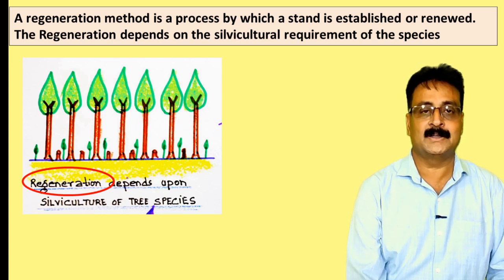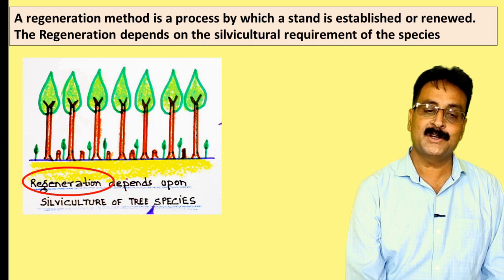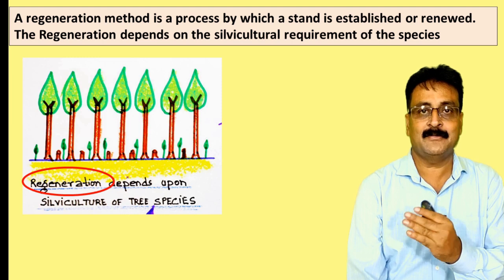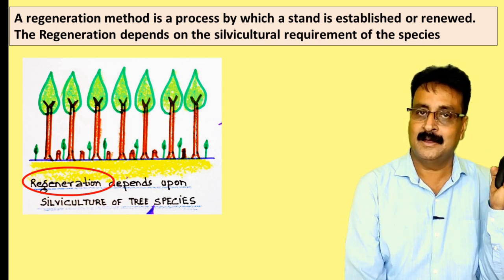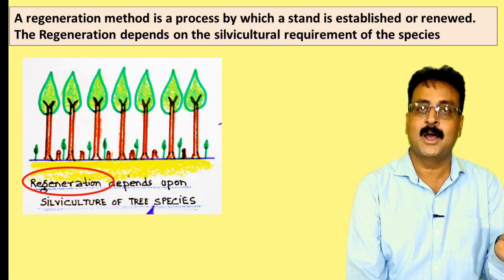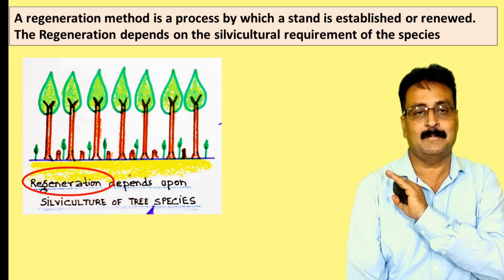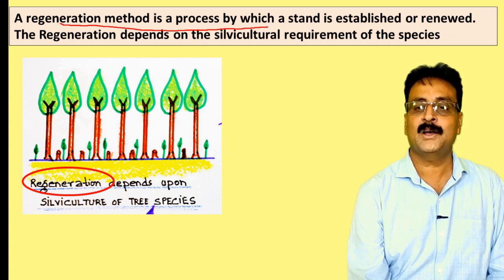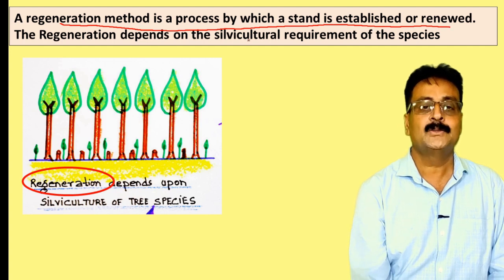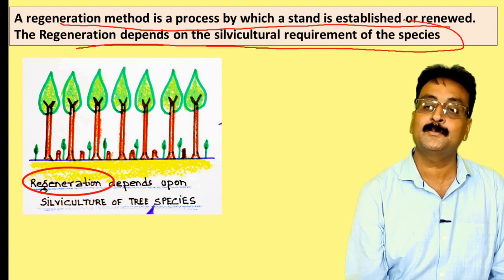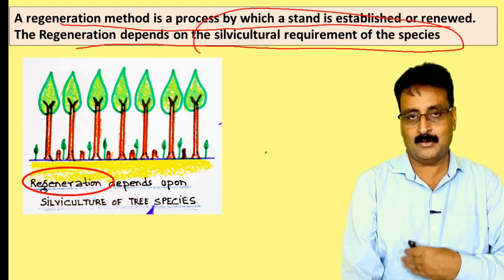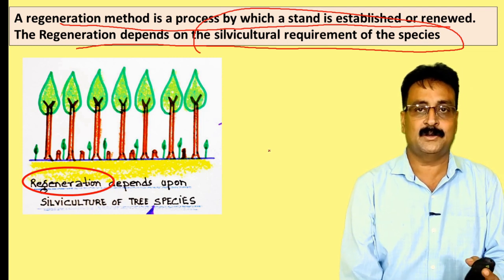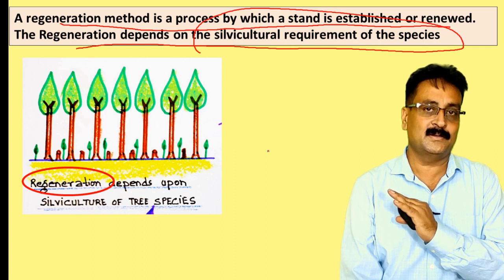The second component is regeneration. After harvesting, our prime objective is regeneration. Regeneration depends on the silvicultural requirement of the tree species — different species have different requirements. As covered in earlier lectures, some species regenerate in the open in full light, some regenerate in moderate shade, and some are shade bearers. The regeneration method is the process by which a stand establishes or renews itself.